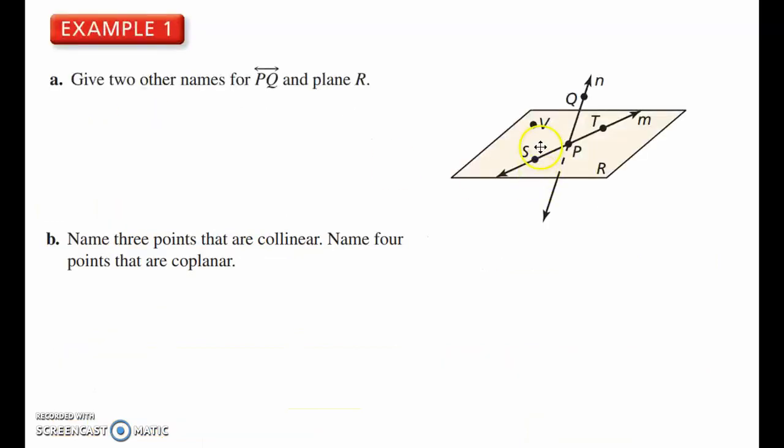Okay, let's look at a couple examples. This is the type of problems that you might see. Example 1A give two other names for PQ and plane R. So line PQ, that's this line that goes through these two points. We can name it PQ, remember the direction doesn't matter, so we could also call it line QP. Or we have the lowercase letter up there, we could also call it line N.